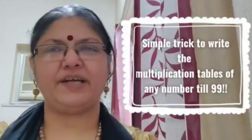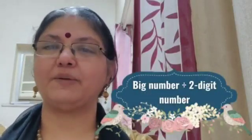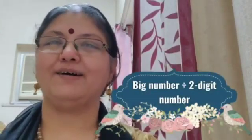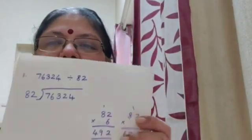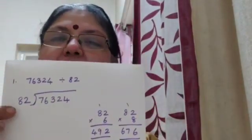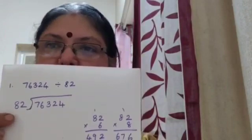You have a big number divided by, let's say, a two-digit number. This works for all numbers but I'm talking about two-digit numbers more so today. When you have, for example, I have written a small question here which has a big number divided by something which is a two-digit number which is 82.